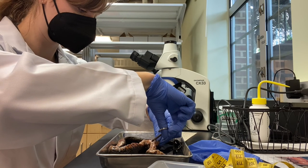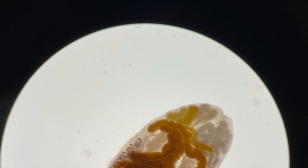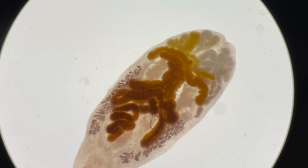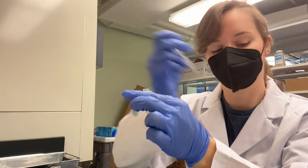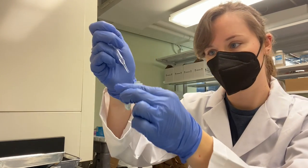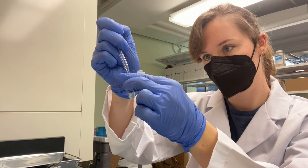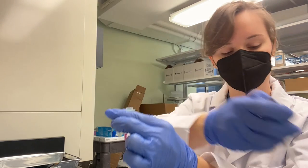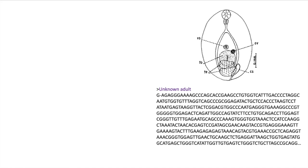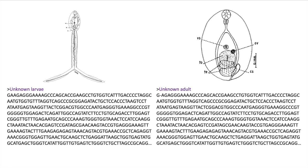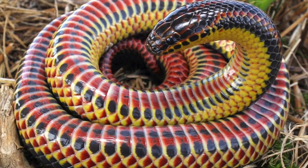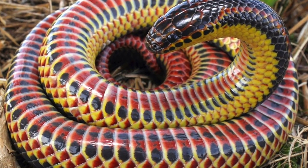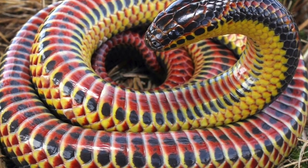In our lab, we find parasites in road-killed snakes, like this trematode from a banded water snake. We then use DNA sequencing to identify them to species. By including genetics in our identifications, we can connect these parasite adults to larvae of the same species and resolve some unknown life cycles. We can also identify parasites that could serve as potential bioindicators for rare host species.